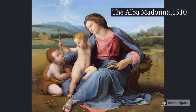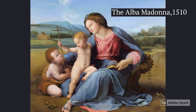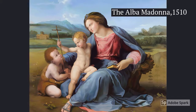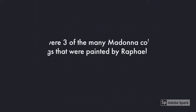The Alba Madonna is a painting created in 1510. Again, we see the young woman who is married sitting down holding a book in her hand, as we saw in the Madonna del Cardellino, and one of the saints behind her is holding a cross, which we also saw in the Belle Jardine.